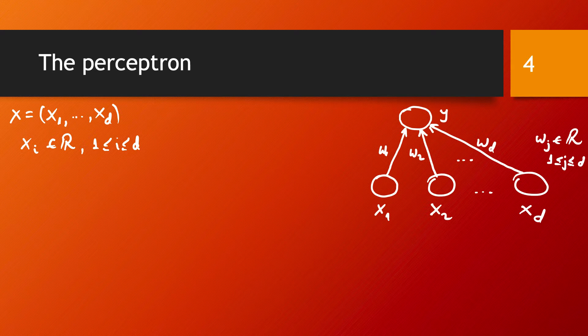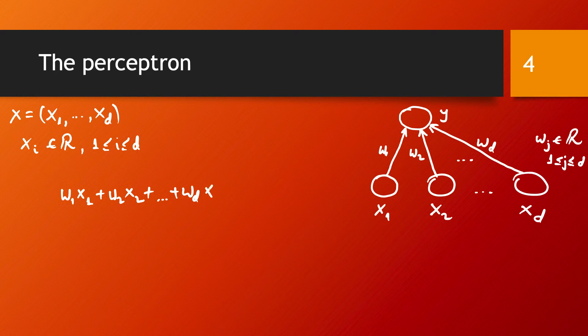What the output neuron does — what the perceptron does — is essentially a linear computation in terms of the inputs. The computation is of the form: w1·x1 + w2·x2 + ... + wd·xd. And as usual, there is also a free term, so it becomes w0 + w1·x1 + ... + wd·xd.